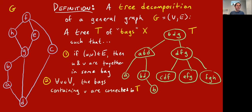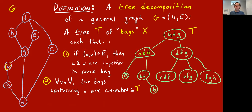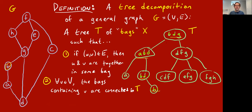Rule two is: for every vertex in the graph, the bags that contain it must form a connected subtree of T. Take some vertex like B — here's B, here's B, here's B, and here's B — they form a connected subgraph of T. We can pick another vertex, say F: look at all the bags that contain it, and we see these three contain it, and that's connected.